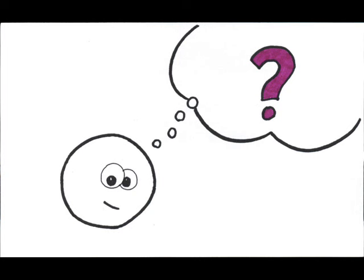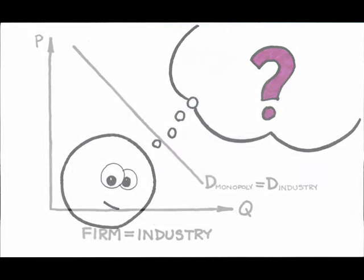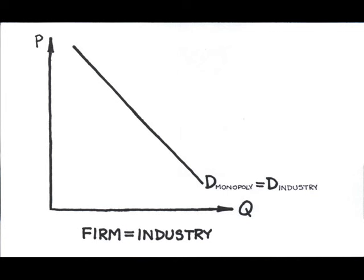Because the monopoly is the only seller of the product, anyone who wants to buy the product must buy from the monopoly. This means that the demand faced by the monopolist is the entire industry or market demand. What does marginal revenue look like? To figure that out, let's look at a basic demand schedule.